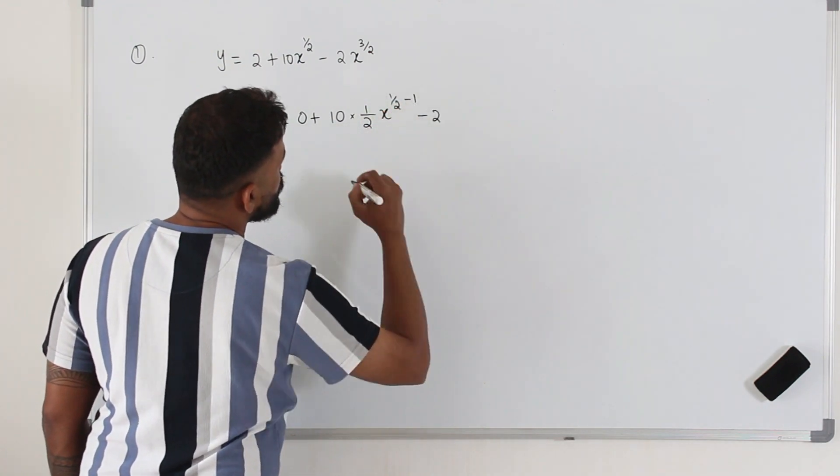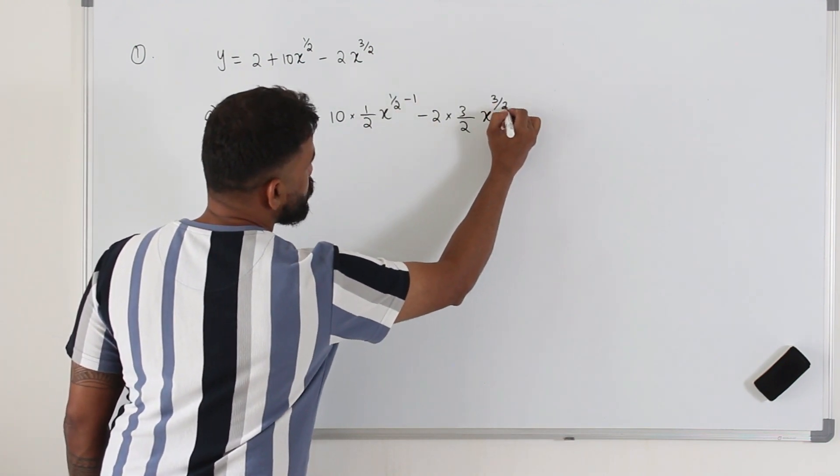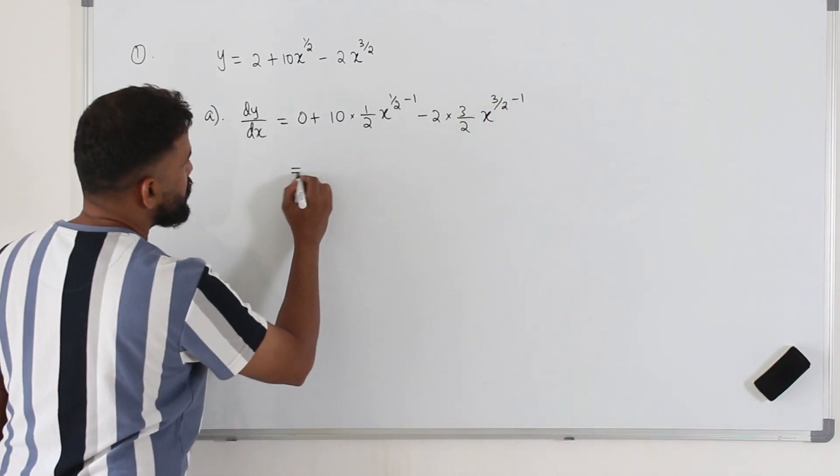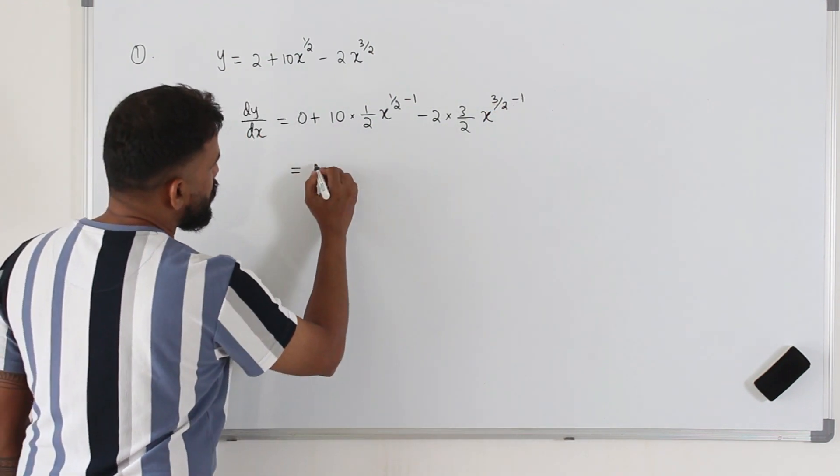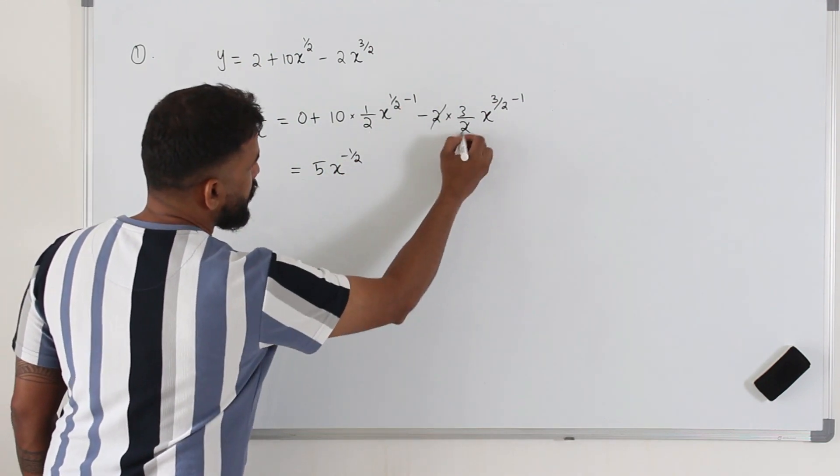Minus 2. Apply the same rule here. 3 over 2x power 3 over 2 minus 1. And then simplify. 10 times half is 5x to the power half minus 1 is negative half. 2 can be cancelled.